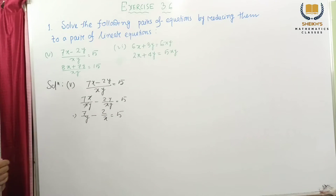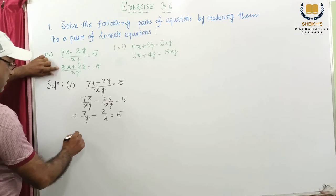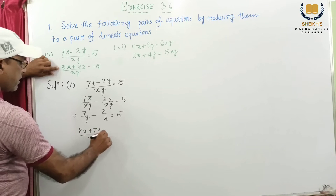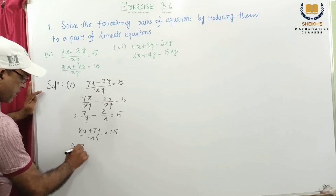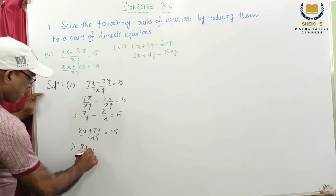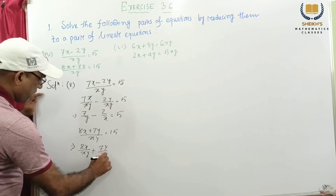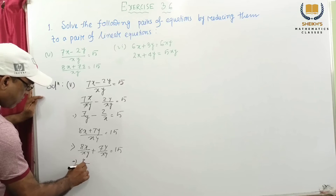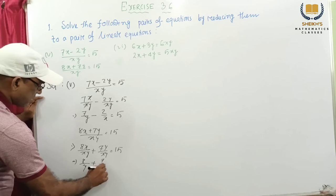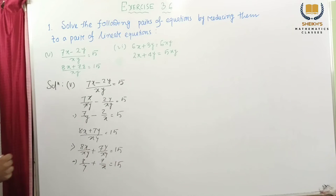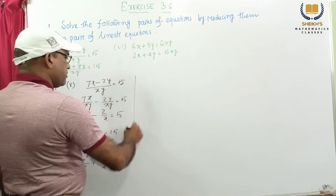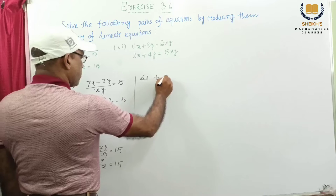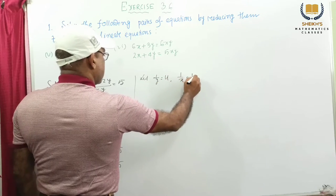Again, this equation we consider: 8x plus 7y by xy equal to 15. This implies 8x by xy plus 7y by xy equal to 15. While xx cancel, 8 by y plus 7 by x equal to 15. We get this. So we put in: let 1 by y equal to u, 1 by x equal to v.